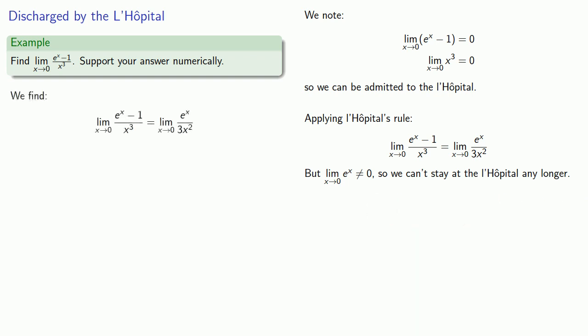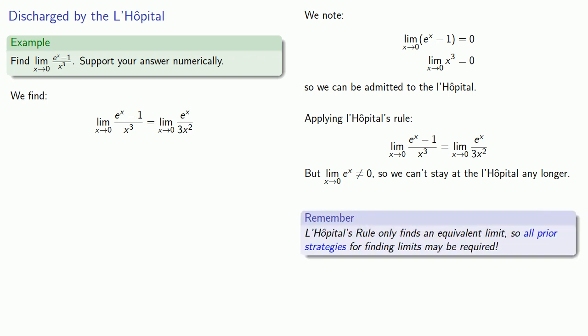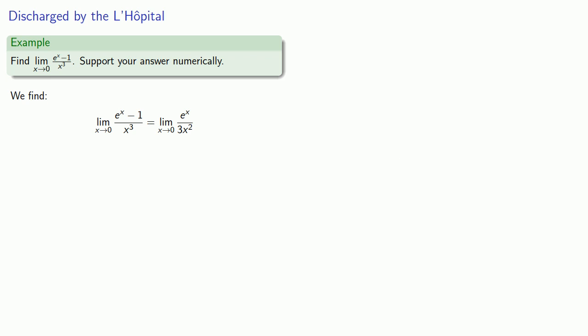So what can we do? The important thing to remember is that L'Hôpital's rule only finds an equivalent limit, so all prior strategies for finding limits may be required. Since this limit can't be admitted to the L'Hôpital, we'll have to evaluate this limit using some other method.